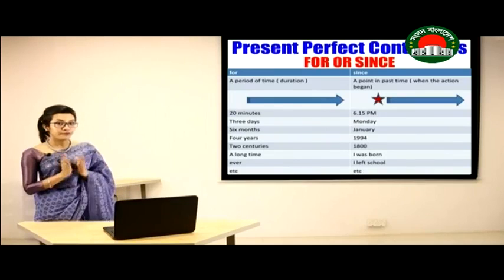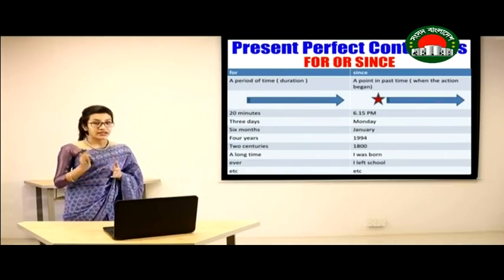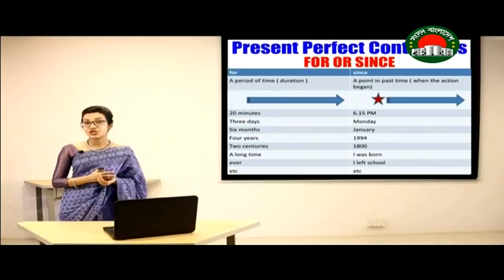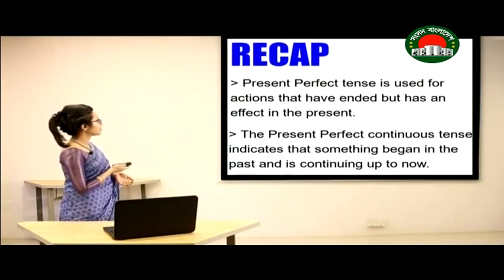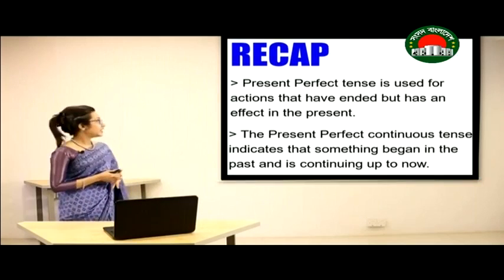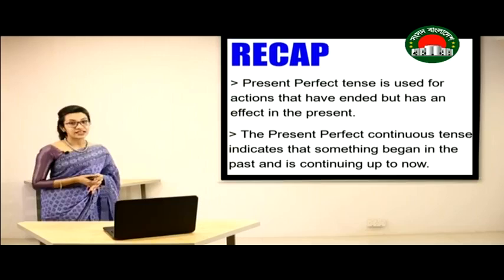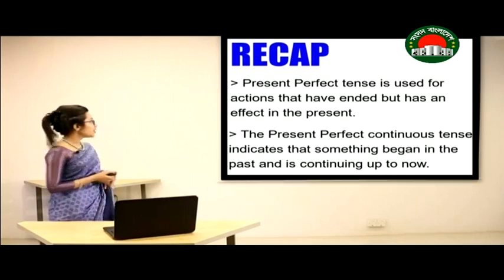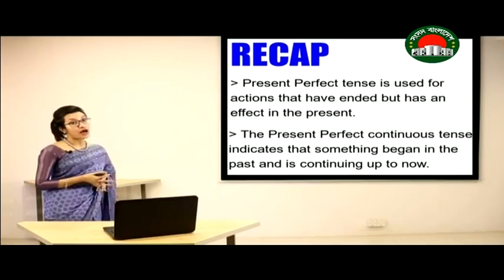To summarize: if you have a duration, use 'for'; if you have the point when the action began, use 'since.' In today's class, we have learned that Present Perfect Tense is used for actions that have ended but have an effect in the present, and Present Perfect Continuous Tense is used to indicate that something began in the past and is continuing up to now.